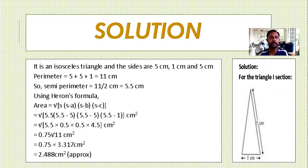Once you find S, directly apply Heron's formula. Area is the square root of S into S minus A into S minus B into S minus C. Exact substitutions and simplifications. See the exact substitutions. 5.5 into 5.5 minus 5, 5.5 minus 1, 5.5 minus 5.